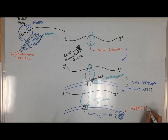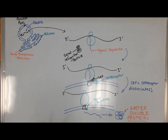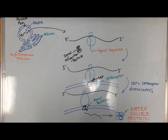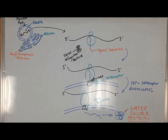The signal sequence opens the translocation channel and remains bound to the channel due to its high hydrophobic region. The polypeptide is threaded through the ER lumen and is cleaved by a signal peptidase, leaving behind the signal sequence, creating a water-soluble protein. Protein plugs are present in the ER lumen, bind to the channel, and assist with its closing and removal and degradation of the signal peptide sequence.